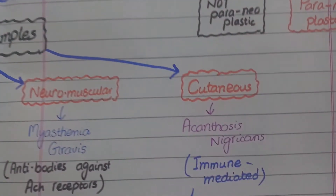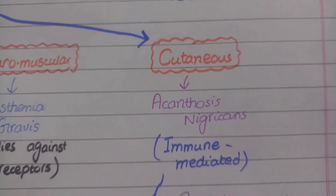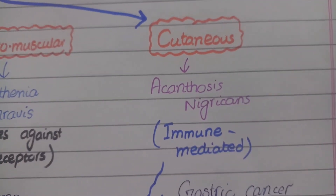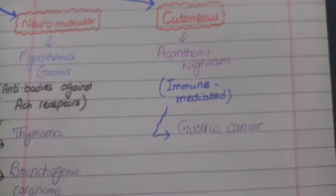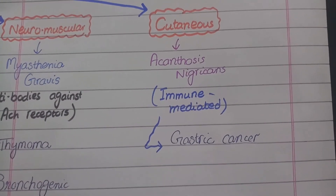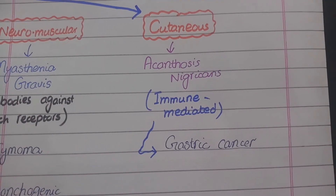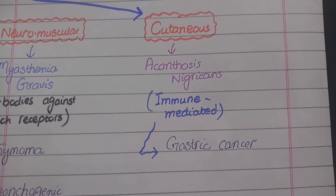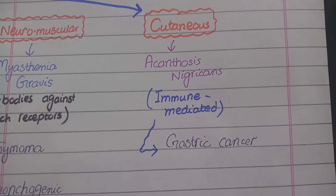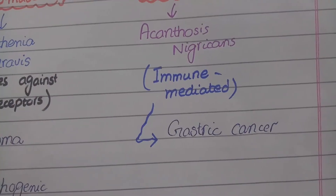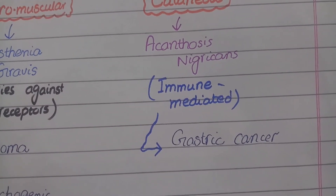The last category is cutaneous, and the disease in this category is acanthosis nigricans. In this disease, black velvety lesions are formed on the skin. The etiology is immune-mediated, and the major cancer that causes acanthosis nigricans is gastric cancer.